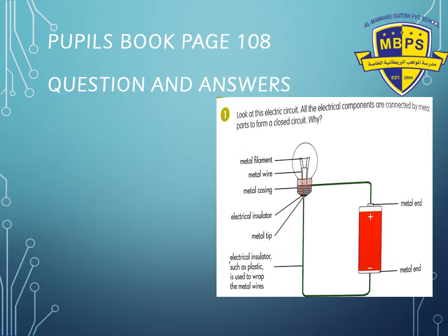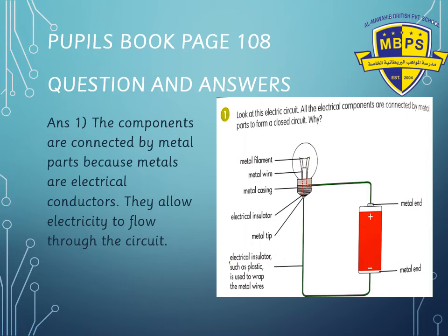Now open your pupils' book to page 108, question number 1. Look at the electrical circuit — all the components are connected by metal parts to form a closed circuit. Why are they connected to the metal parts and not to glass? Because metal parts are electrical conductors — they allow electricity to flow through the circuit. Very good, Grade 5!